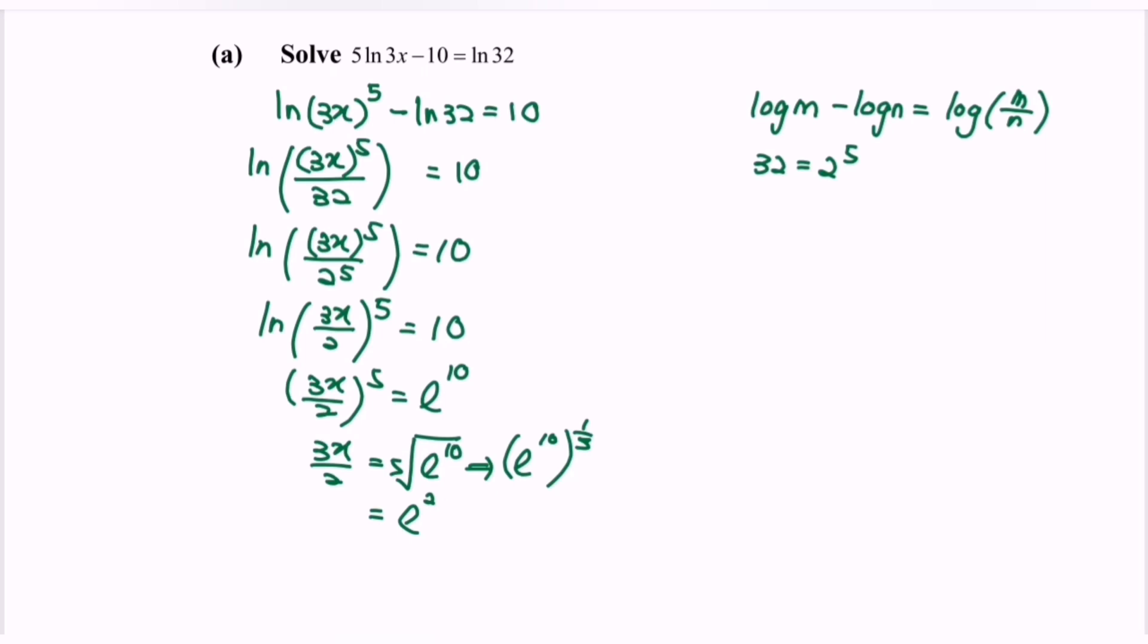Therefore, x = (2 × e^2) / 3. That is the final value for x.